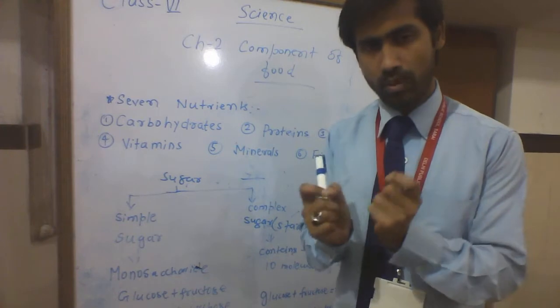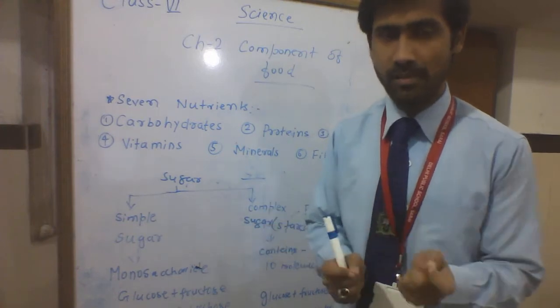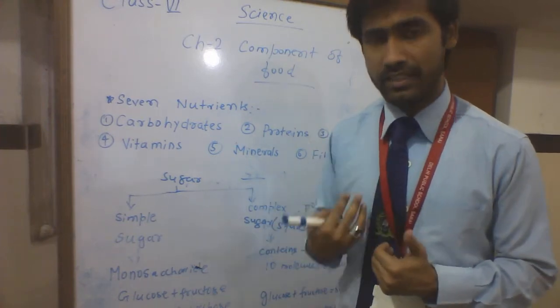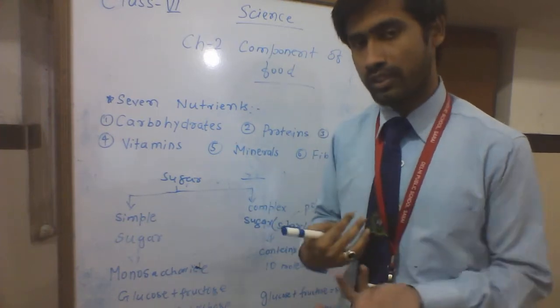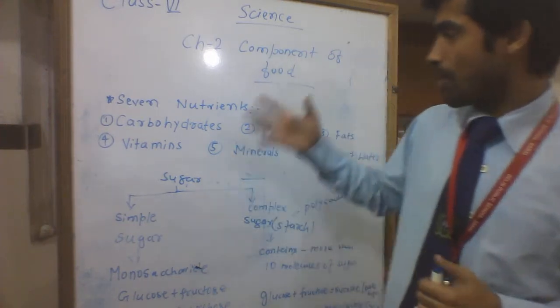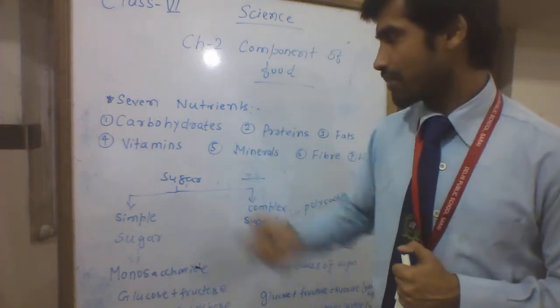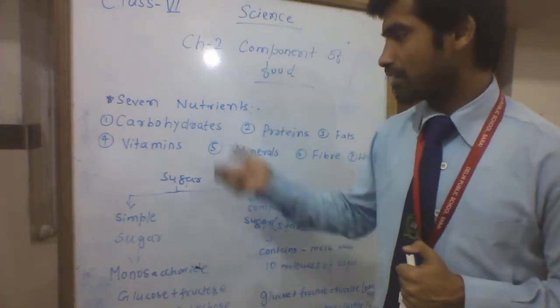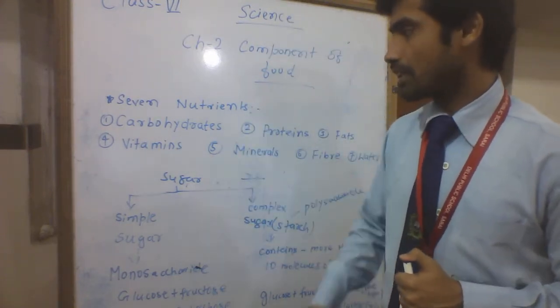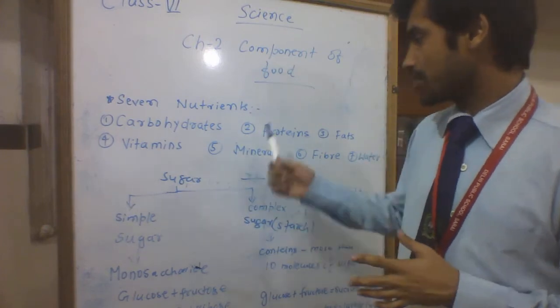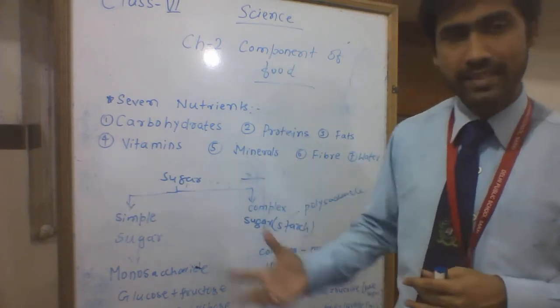There are many different materials which give us energy and nutrients. There are seven types of nutrients found in food: carbohydrates, proteins, and fats are the first three.